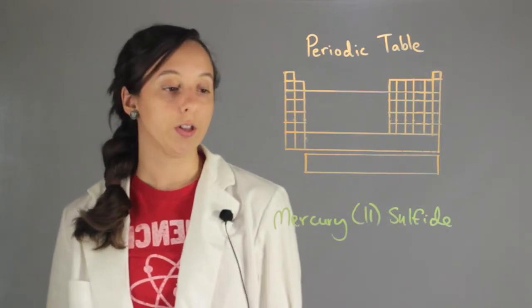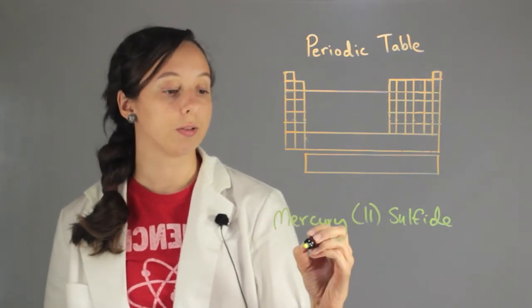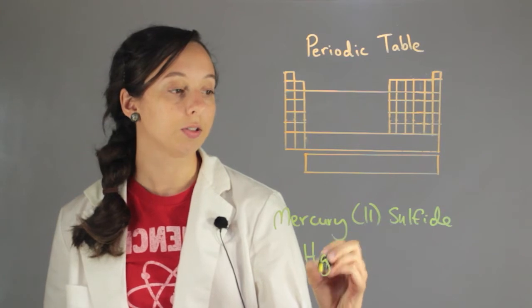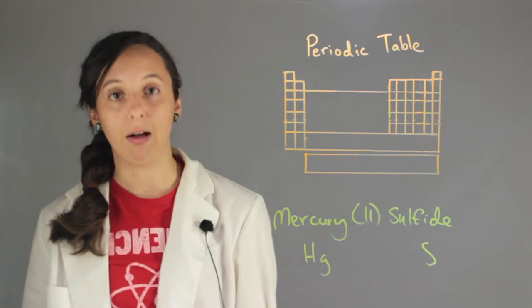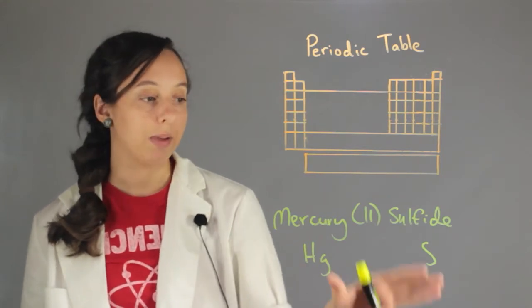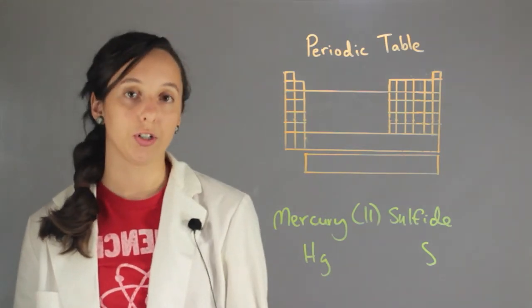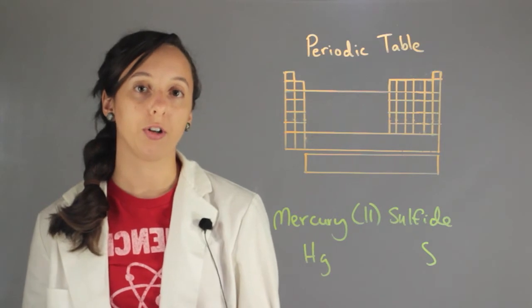So just initially, we know that we're going to be using mercury, chemical symbol Hg, and sulfur, chemical symbol S. And so now we have to figure out how to balance it because we can't just combine these two things. We have to make sure the charges balance out so that our overall charge is neutral.